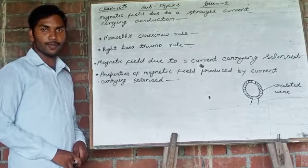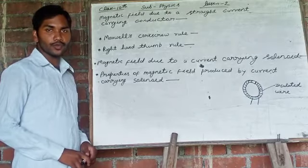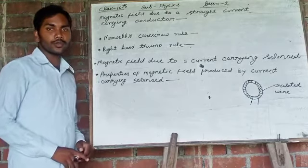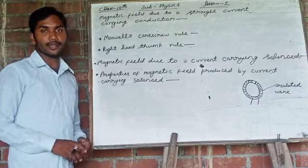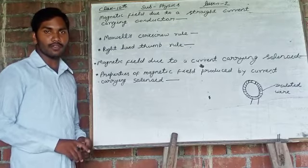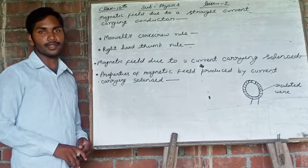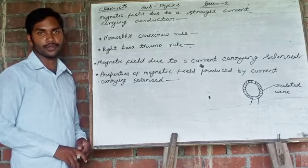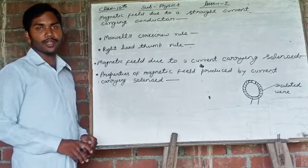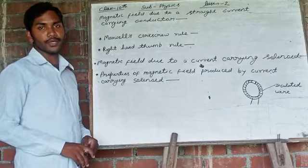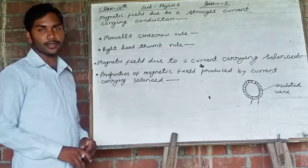In the previous video, we discussed about magnetic field due to current carrying conductors and magnetic lines of force, and we also discussed the characteristics of magnetic lines of force. Today, we will come to know the direction of magnetic field due to straight current carrying conductors.